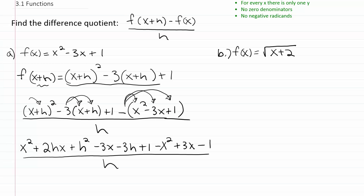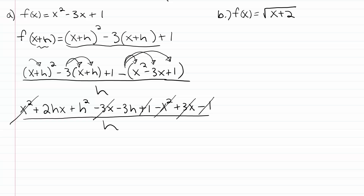All of that is over h. Now from there, we're just going to combine like terms — anything that's alike can be combined, and we'll often find things that cancel out. The negative three x and the positive three x cancel out. The negative x squared cancels with the positive x squared, and the negative one cancels with the positive one. So looking at the fraction, we're left with just the terms that have h's: two hx plus h squared minus three h, all over h.